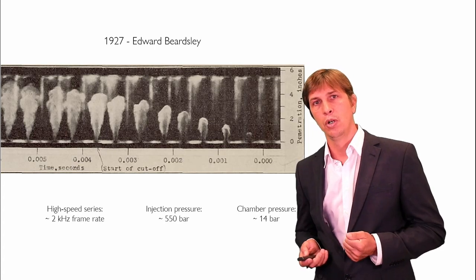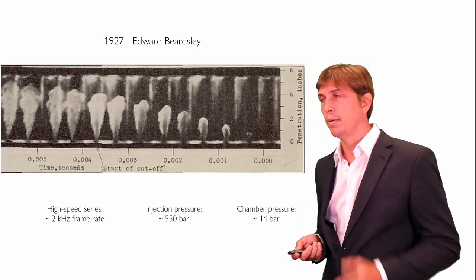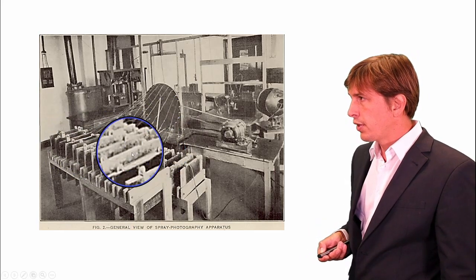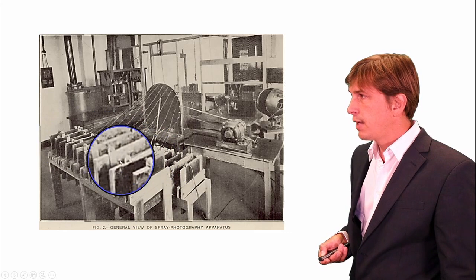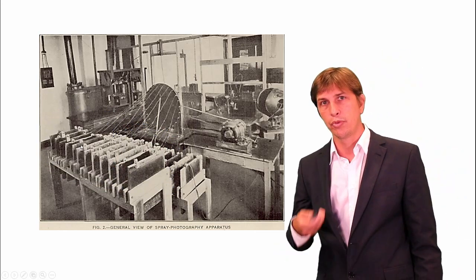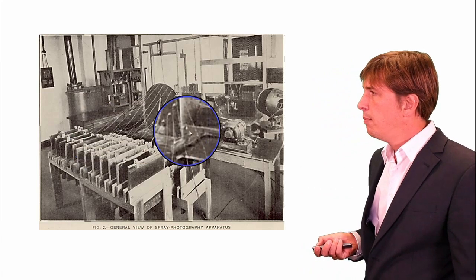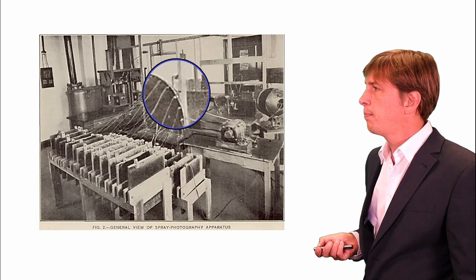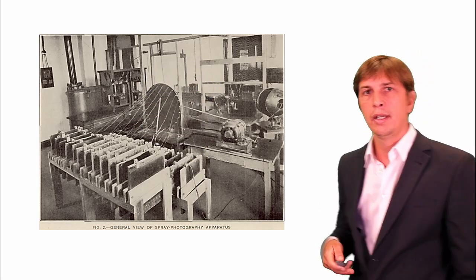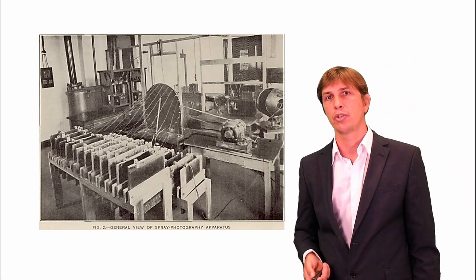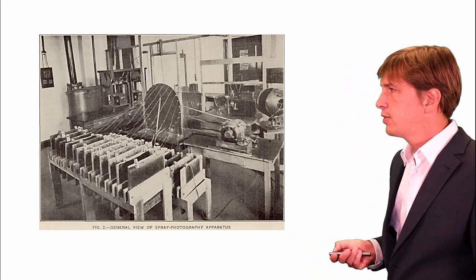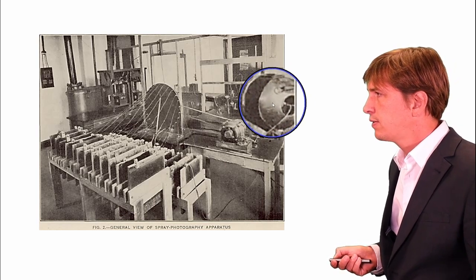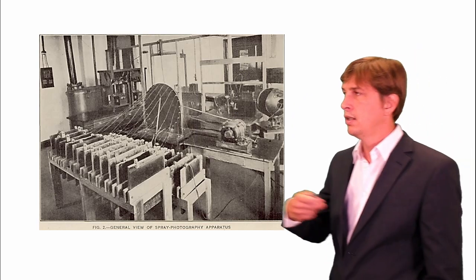I actually have a picture of the experimental setup. We can see here a series of condensers — 25 of them — and each condenser was charged up to 30,000 volts. Then a motor was used to rotate a plate and switch on each of those condensers within a very short time. When a condenser was discharging, an electric spark was created in a ball reflecting light towards the spray.